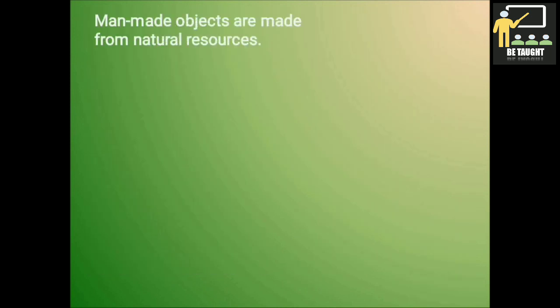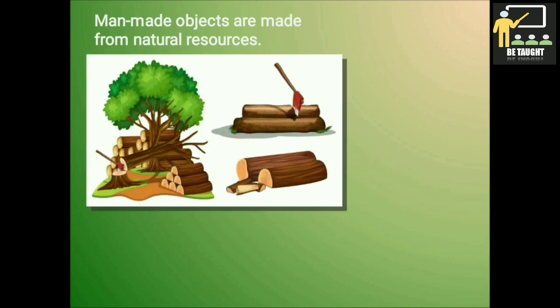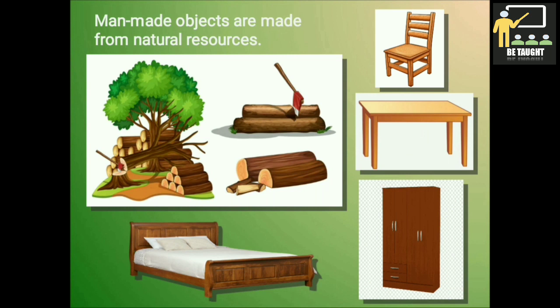Man-made objects are made from natural resources. For example, we make chairs, tables, cupboards, beds, etc. All the different furniture from the wood obtained from trees. So the trees are cut down and these different furnitures are made.